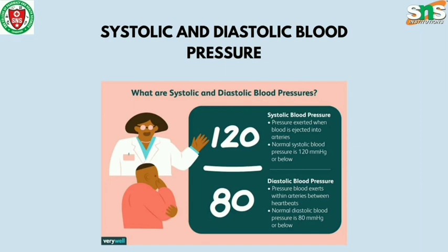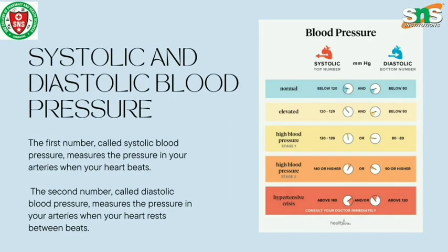Systolic blood pressure is defined as the pressure exerted when blood is ejected into the arteries. Normal systolic blood pressure is 120 mmHg. Diastolic blood pressure is defined as the pressure of blood exerted within the arteries between heartbeats. Normal diastolic blood pressure is 80 mmHg or below. The first number, called systolic blood pressure, measures the pressure in your arteries when your heart beats.